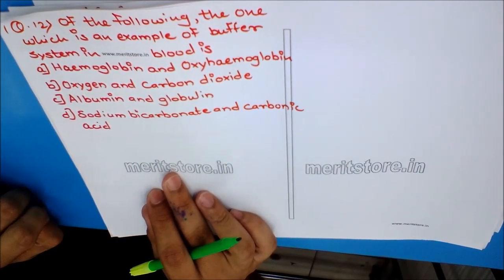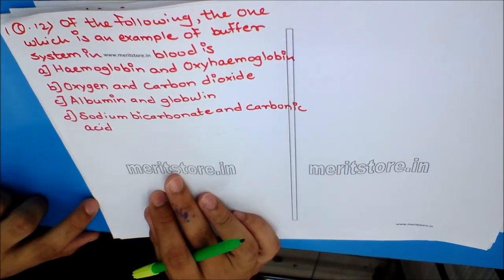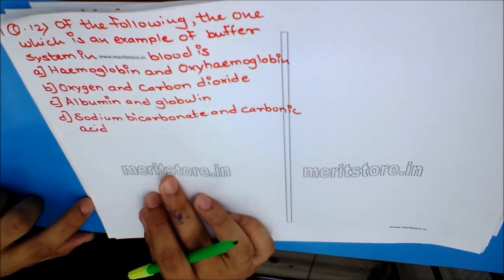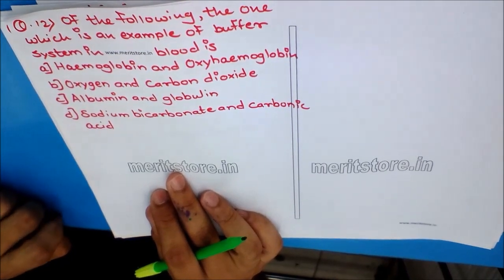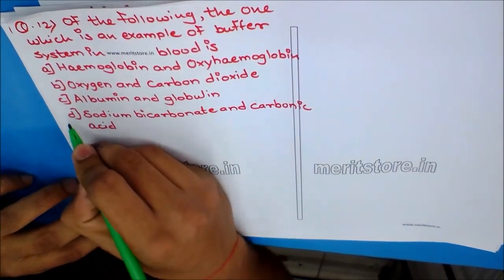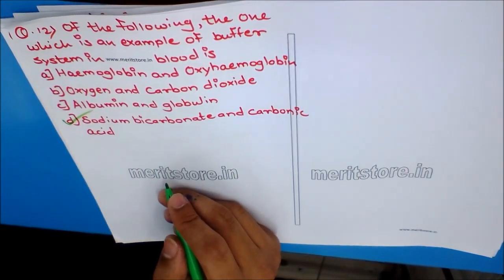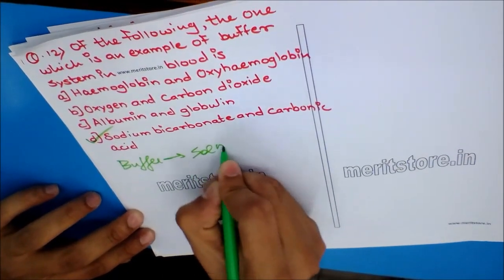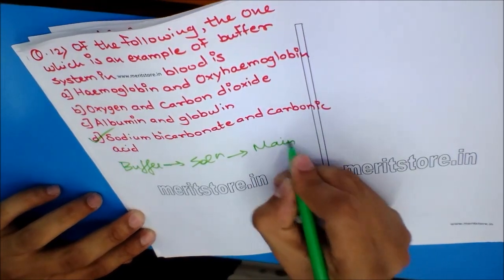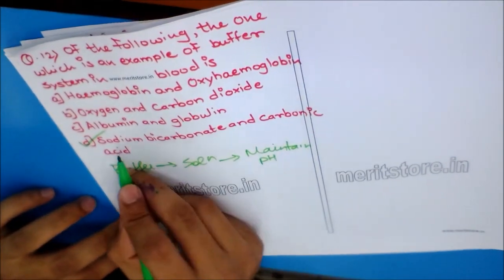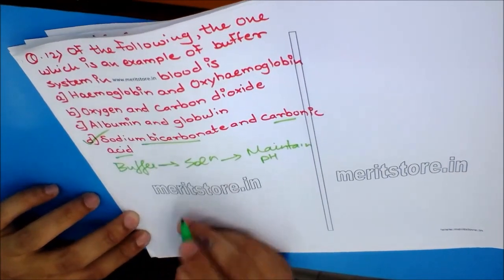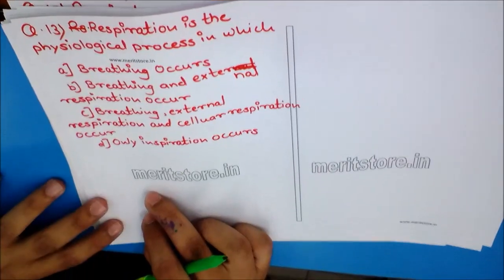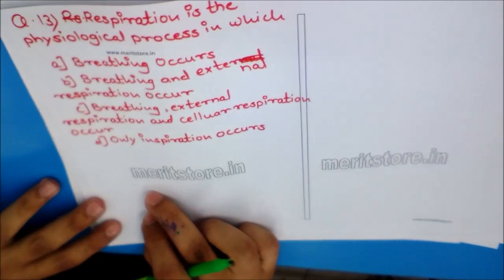Question 12: Which of the following is an example of a buffer system in blood? Options: A) Hemoglobin and oxyhemoglobin, B) Oxygen and carbon dioxide, C) Albumin and globulin, D) Sodium bicarbonate and carbonic acid. A buffer is a solution that helps maintain the pH of a mixture. Sodium bicarbonate and carbonic acid play the role of buffer in blood. The answer is option D.